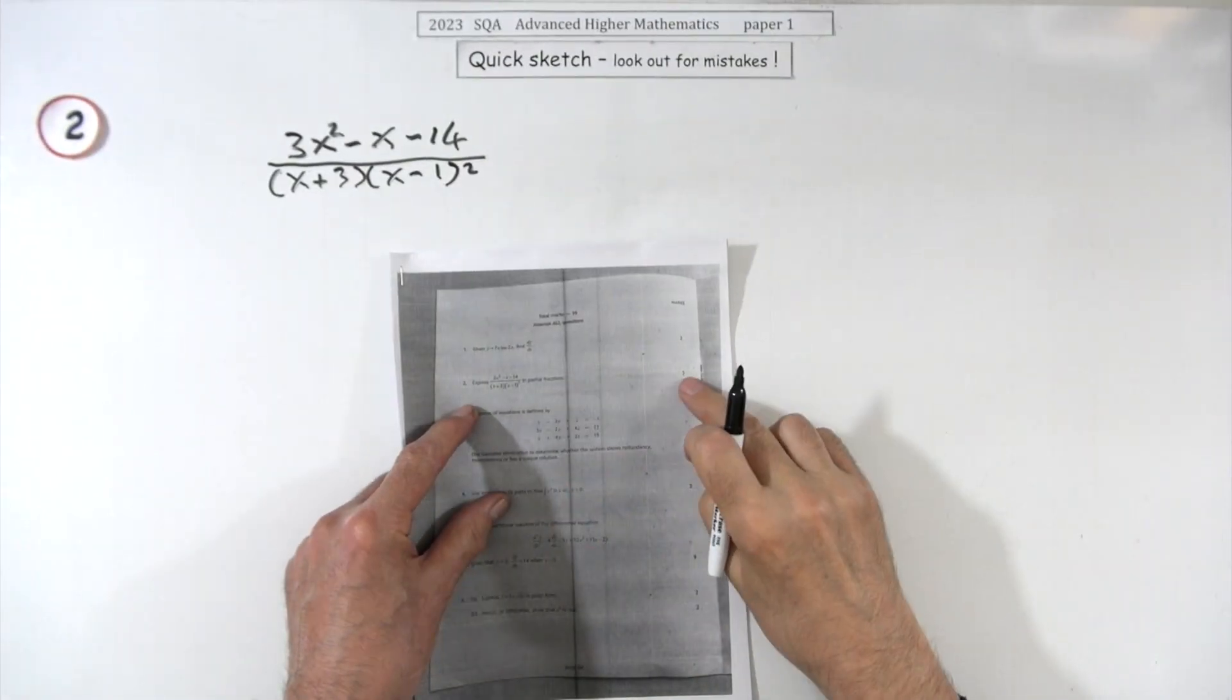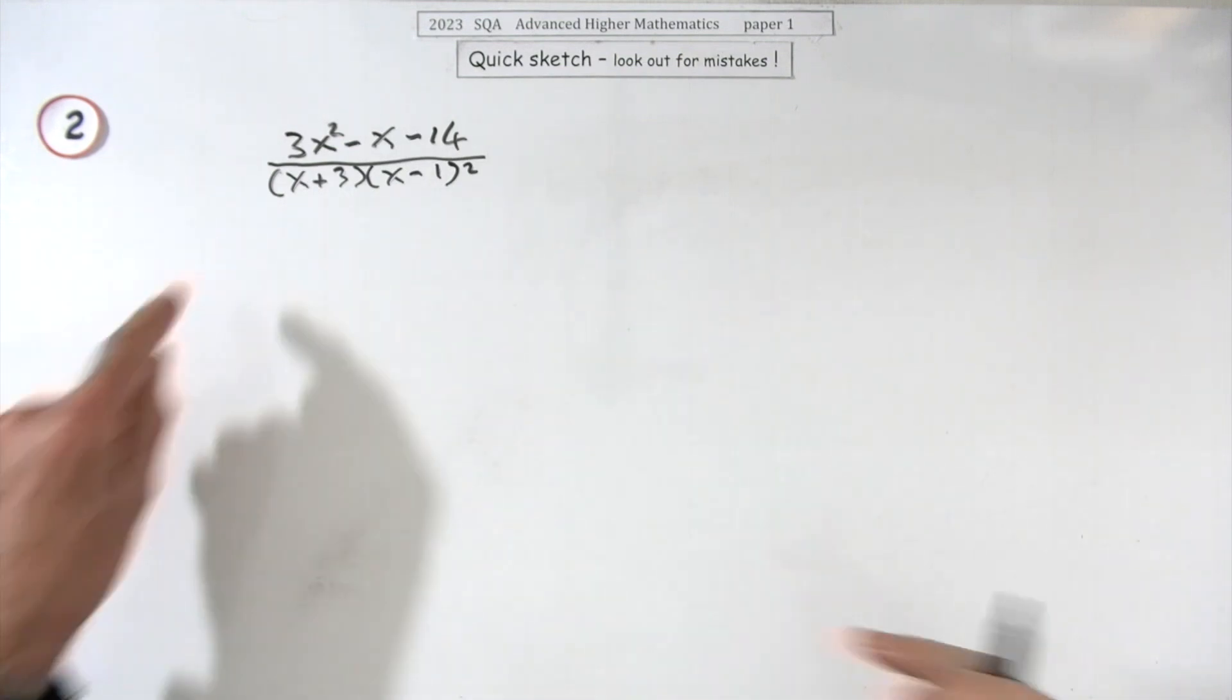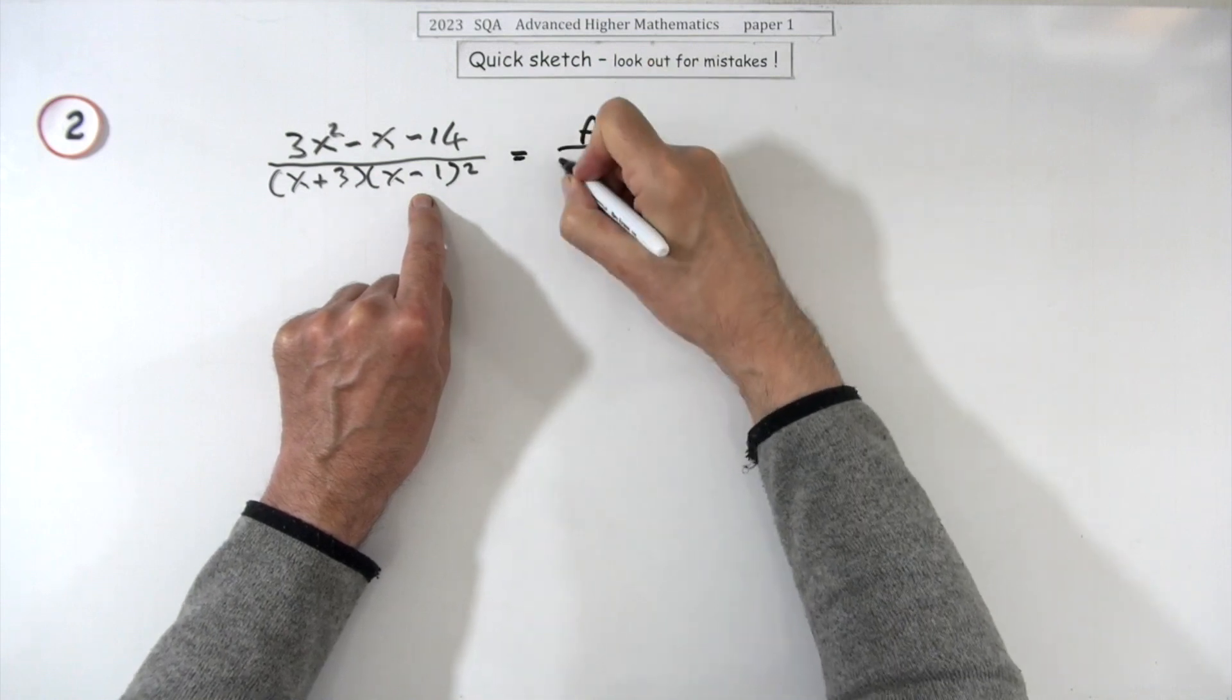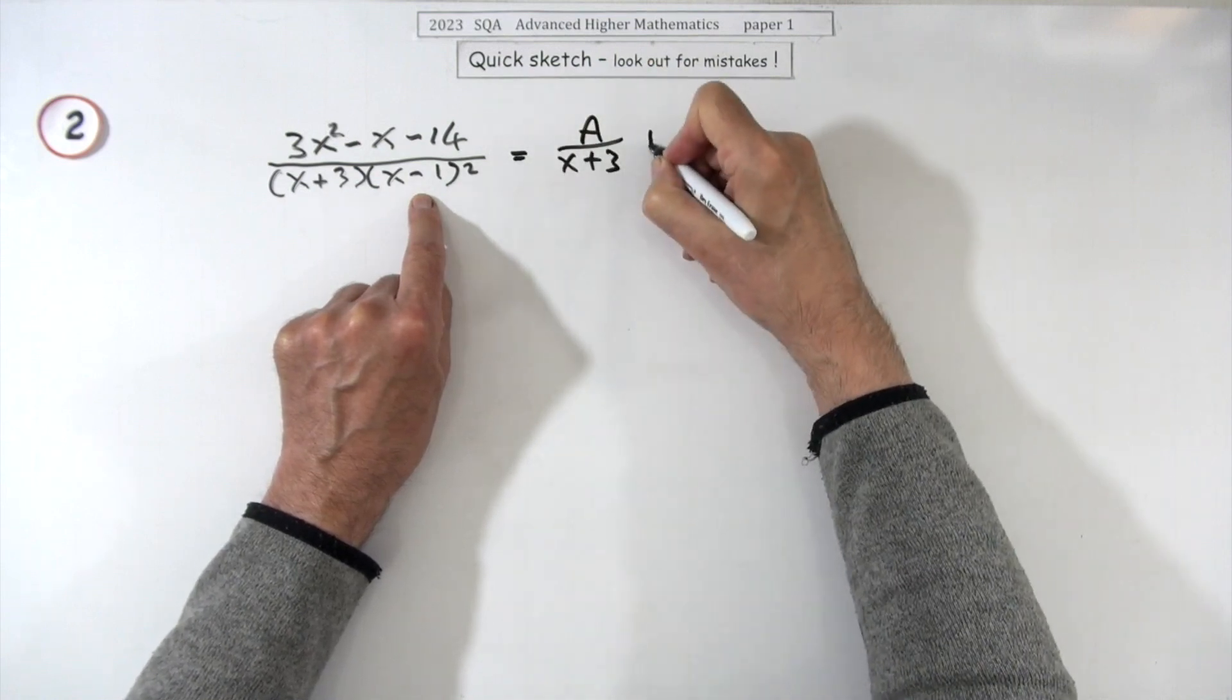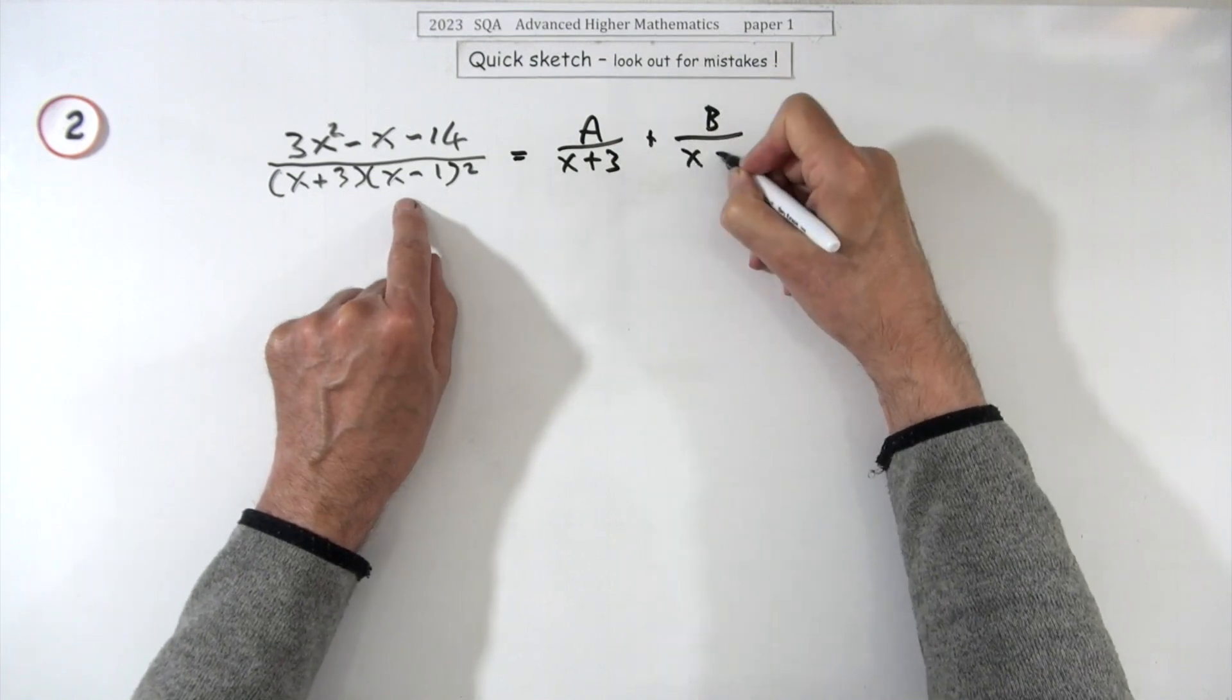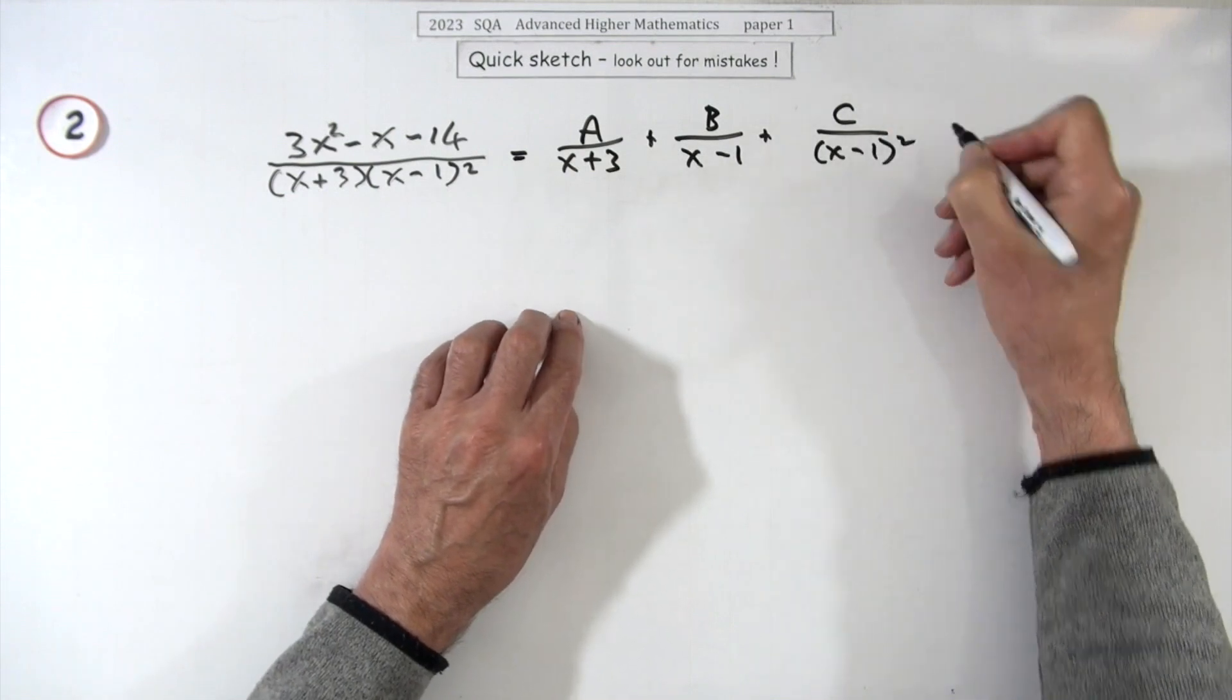So number two then, three marks for: express this in partial fractions. You've got a repeated linear factor in the denominator, but you know what to do with that. So you'll have one for that one, and you'll have one for the (x-1), and then the same again with the (x-1) squared.